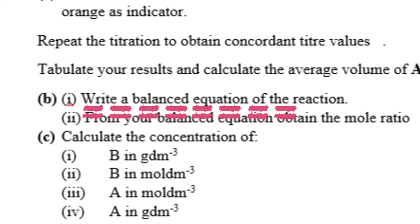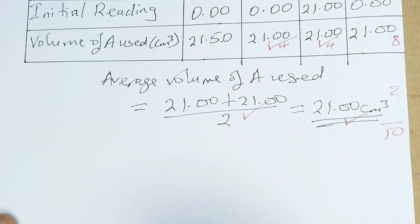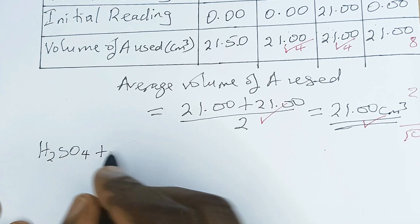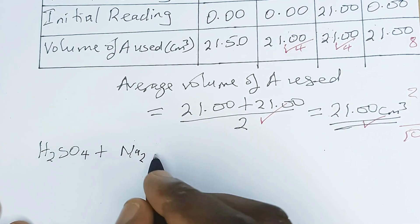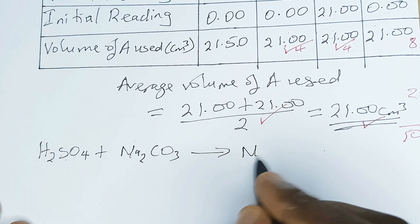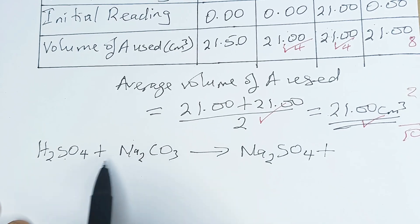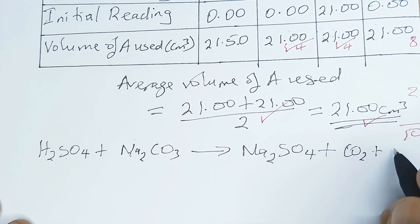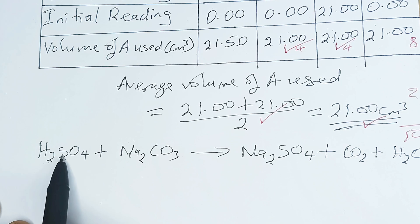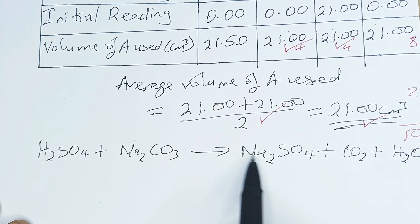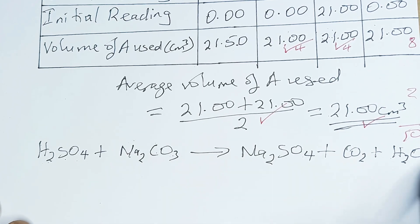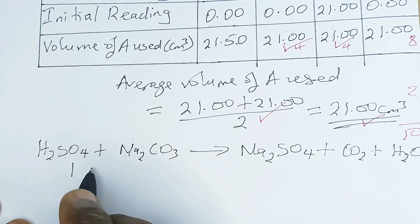Question B: Write a balanced equation for the reaction. We are very sure that the reaction is between H₂SO₄ and the weak base Na₂CO₃, to give Na₂SO₄ plus CO₂ plus H₂O. To balance it: hydrogen is 2 on each side; sulfur is 1 on each side; sodium is 2 on each side; carbon is 1 on each side; oxygen is 3 + 4 = 7 on the left and 4 + 2 + 1 = 7 on the right. This is self-balanced, so it is a 1:1 ratio — that's the acid to base ratio.